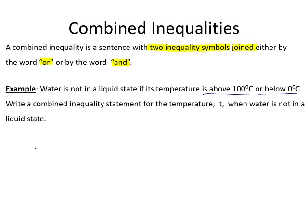We know water is not in a liquid state if it is above 100 degrees. So if T is above 100 degrees, T is greater than 100 degrees, or T is below 0, so T is less than 0 degrees.